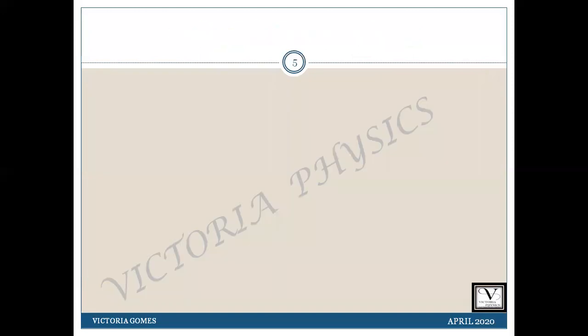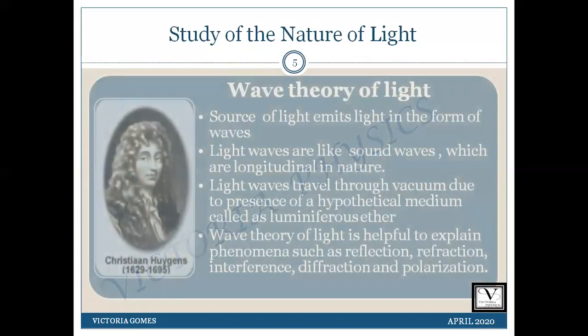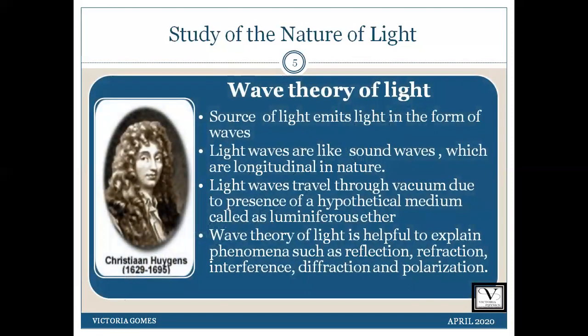Moving on to the next very important theory, the wave theory of light. Christian Huygens proposed the wave theory of light. According to his theory, light from a luminous source travels in the form of longitudinal waves, just like sound waves in air, with uniform velocity in a homogeneous medium in a straight line.